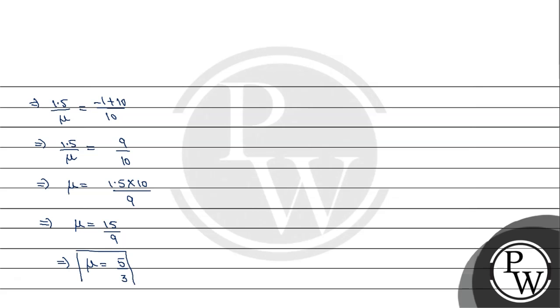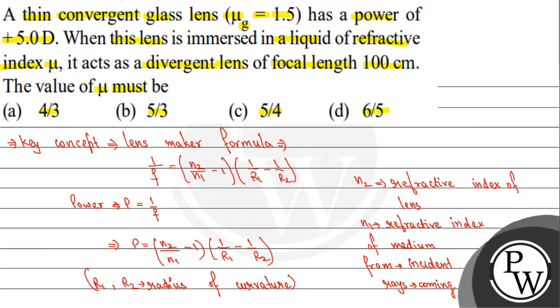So the value of μ = 5/3. Among the given options, option B is the correct answer for this question. I hope you understood it well. Thanks.